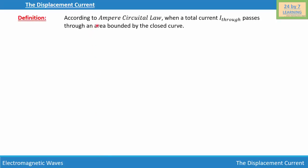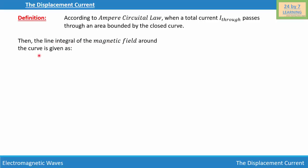Displacement current. According to Ampere's Circuit Law, when a total current I passes through an area bounded by a closed surface, the line integral of the magnetic field around the curve is given as the integration of vector B dot vector dS is equal to mu-zero times I-through.